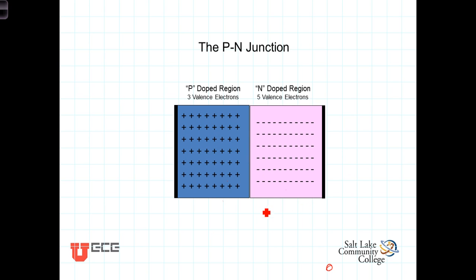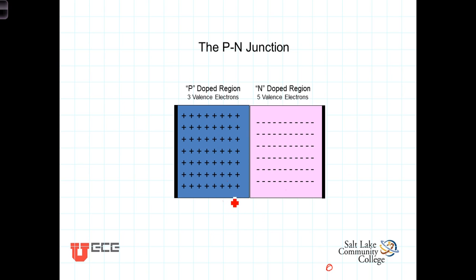The interface between these two regions is known as the p-n junction. It's important to keep in mind that although we denote these two regions with plus and minus signs, they're still electrically neutral. Each atom in both sides has the same number of electrons as it has protons. The positive and negative signs are used simply to symbolize a deficit or surplus of electrons needed to complete the four covalent bonds.